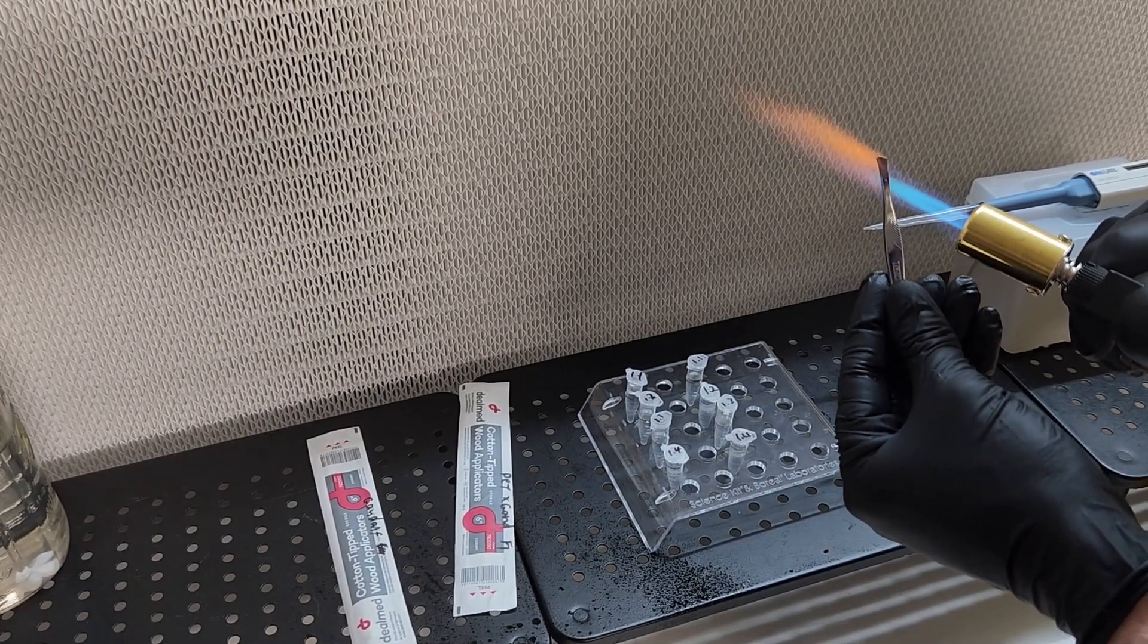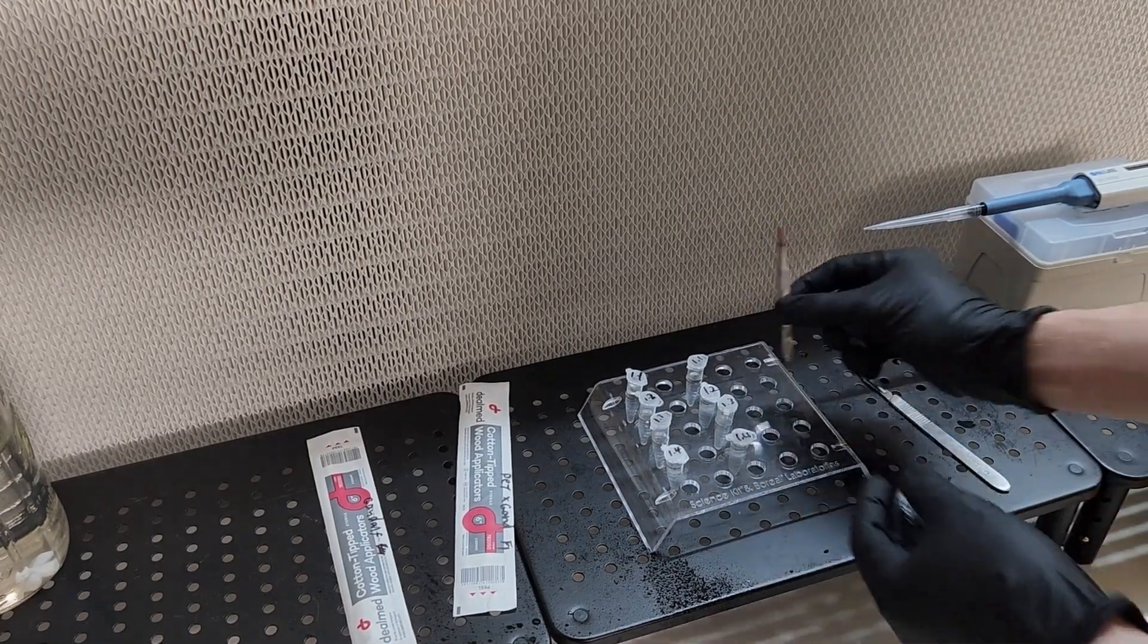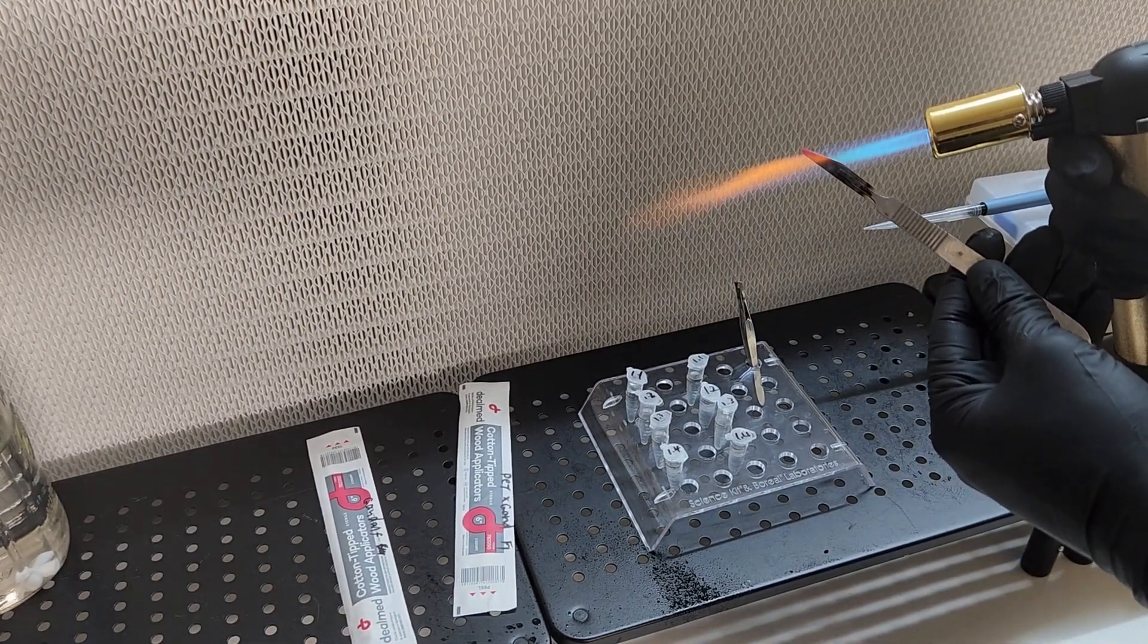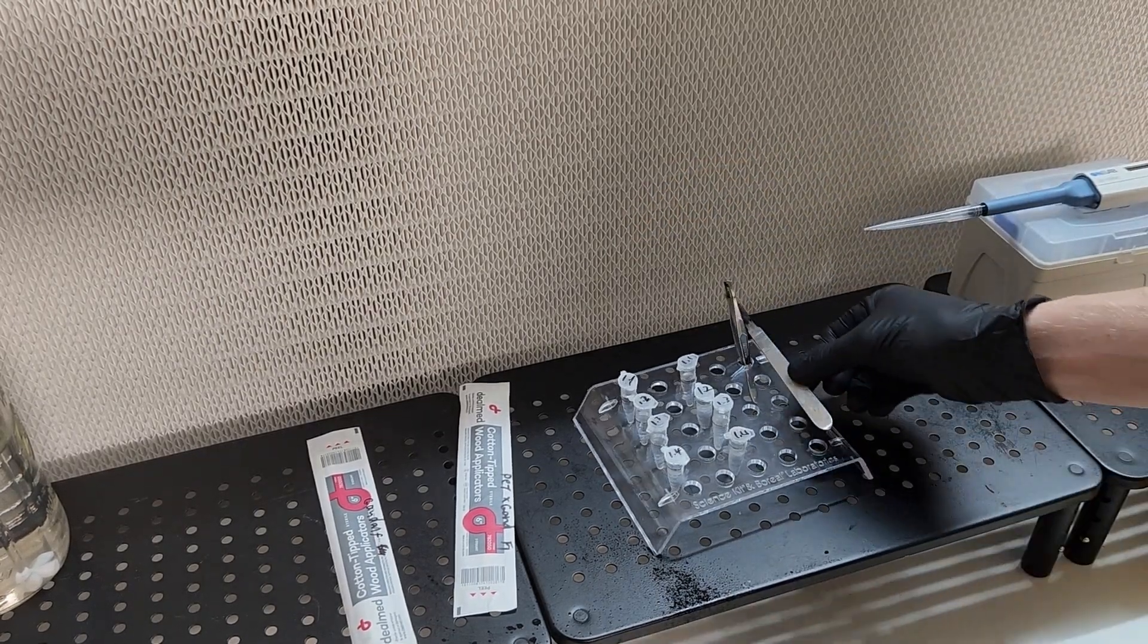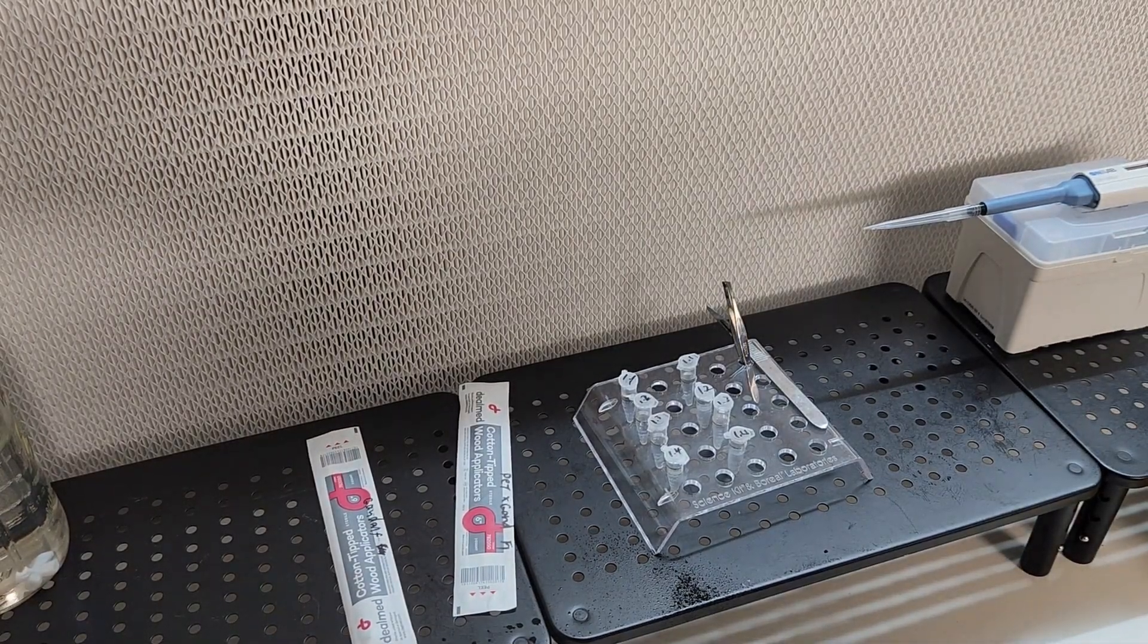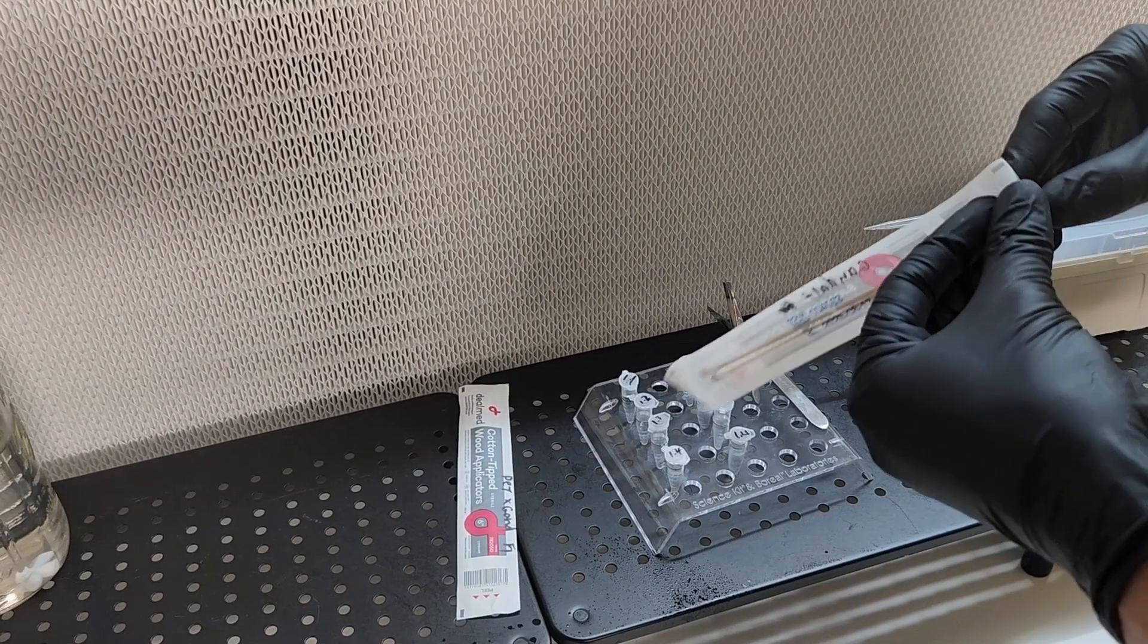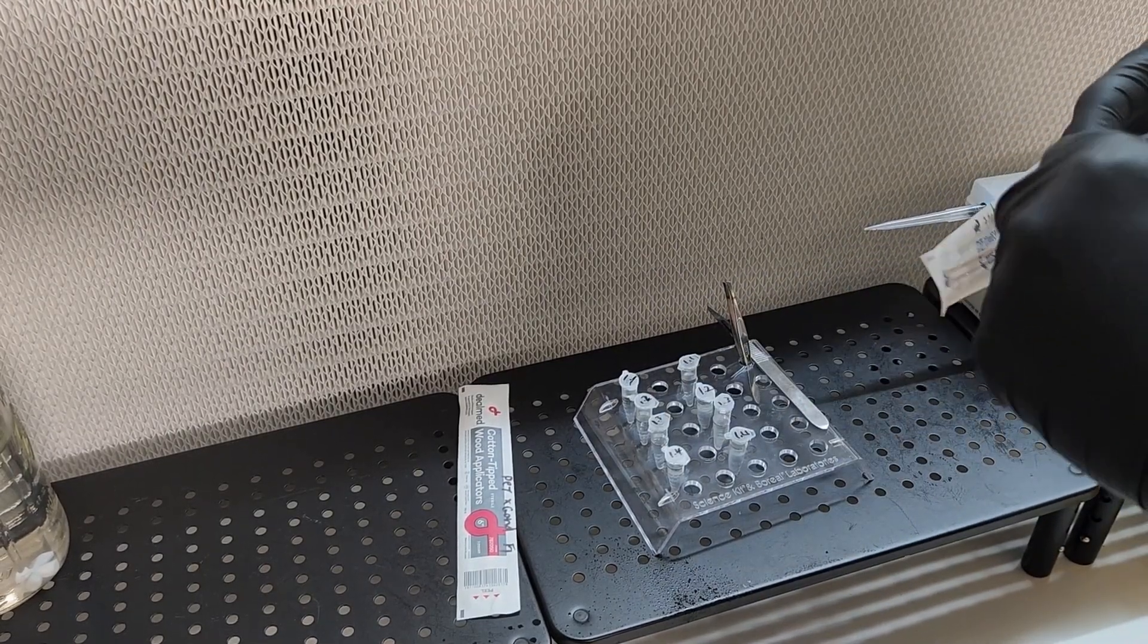Before we can do our serial dilutions we will need to add tween 20 solution to the micro centrifuge tubes. Your first tube which will be the stock spore solution labeled 1.1 is going to get one milliliter of tween 20 solution. Then you're going to add 0.9 milliliters of tween 20 solution to each subsequent micro centrifuge tube. So your 1.2, 1.3, and 1.4 will all get 0.9 milliliters of tween 20.